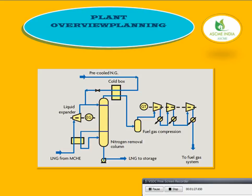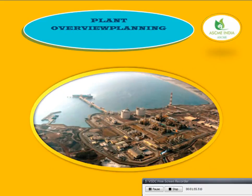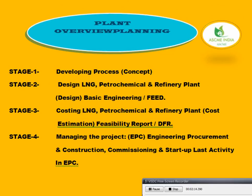Plant overview and planning. As per our planning scenario, we have: pre-cooler, cooler mixer, liquid expander, LNG from the mechanical, LNG to storage, nitrogen removal column, fuel gas compressor, and compressor to fuel gas system. This is the system required for the refinery or the LNG petrochemical plant.